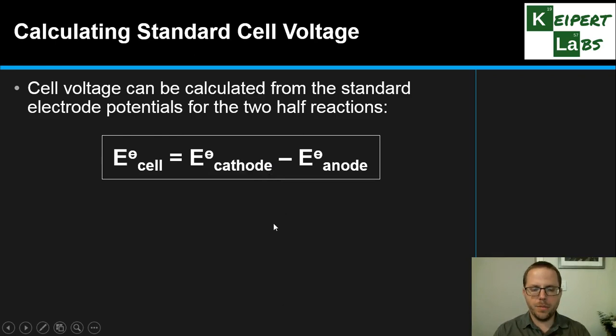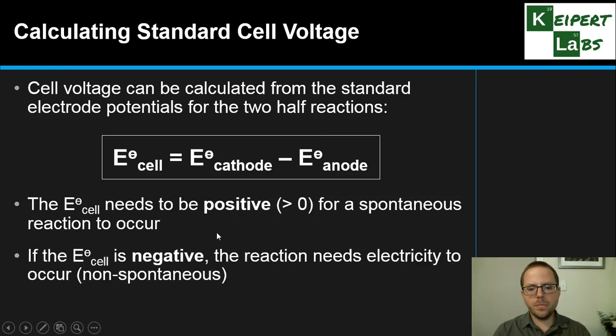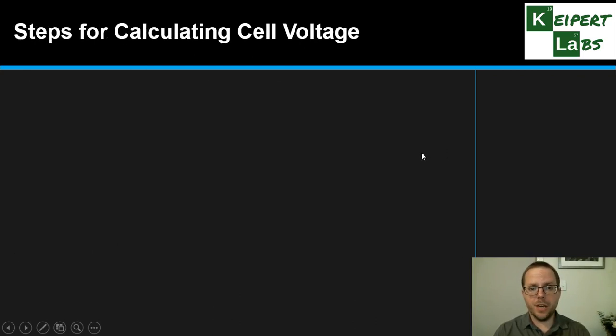You need to be able to identify which one is going where based on which substance will oxidize and which will reduce. But once you've identified that, the math is incredibly simple - it's year seven level math. Remember that the E° for the cell must be positive for a spontaneous reaction to be occurring. If it's not, if we get the numbers the wrong way around or we're trying to make something happen that's not going to, we'll end up with a negative number or less than zero, which means it's non-spontaneous.